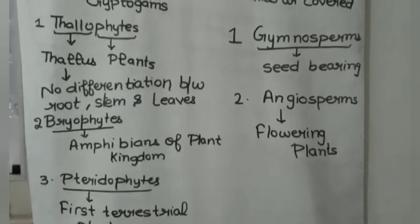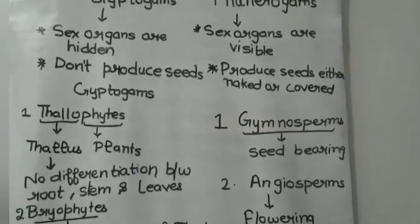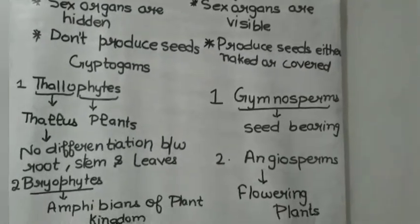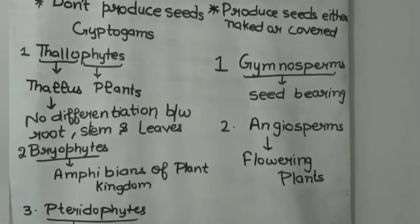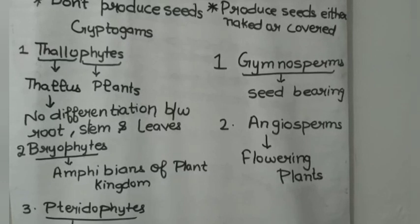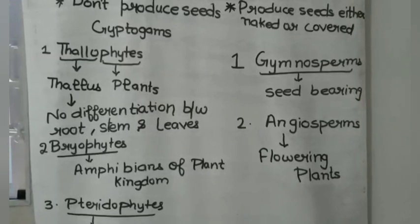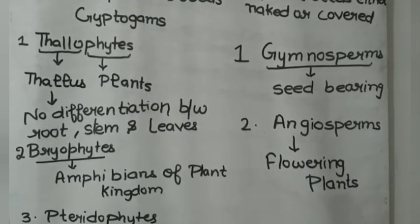Now we will discuss Phanerogames. In Phanerogames, sex organs are visible. They include Gymnosperms, which are seed-bearing plants with naked seeds, and Angiosperms, which are flowering plants with covered seeds.